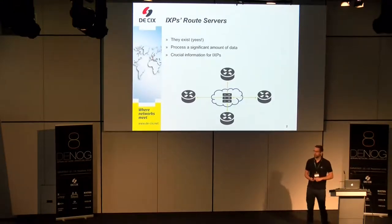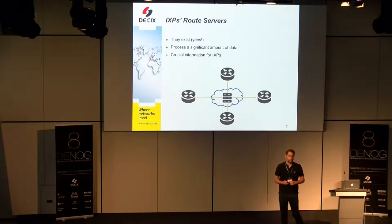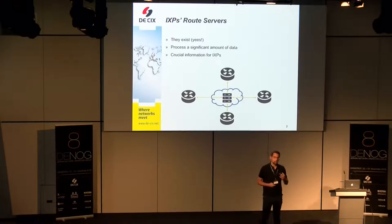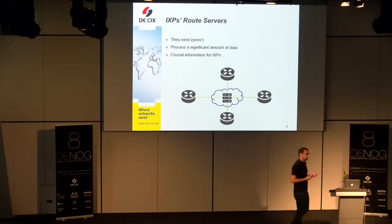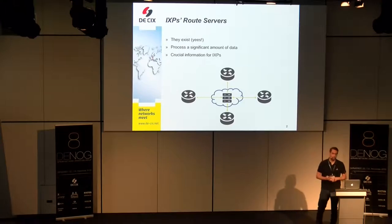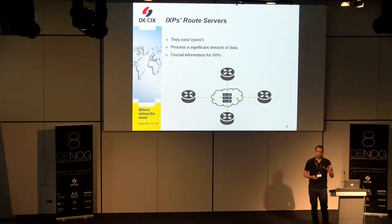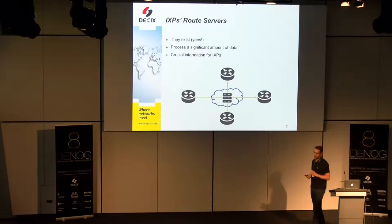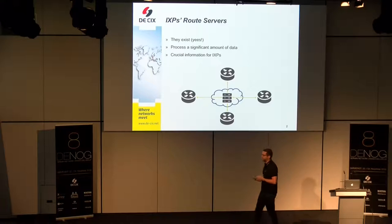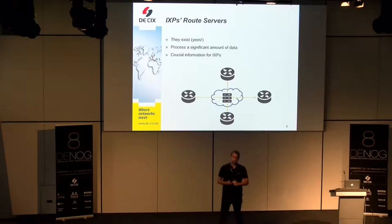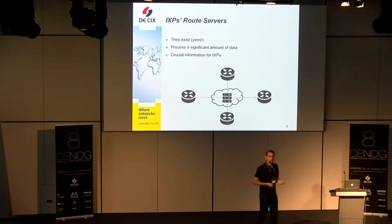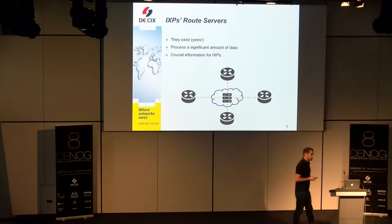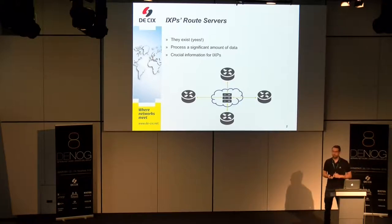Let's start off with the route server. Internet exchange points exist, they are a part of our ecosystem, and one important facility they have is the route server. Route servers have gained importance over the past decade and they process a significant amount of information for the IXP. The most peerings at DE-CIX, especially, are multilateral peerings which really rely on the route server, so there's a lot of BGP communication going on, and that information is very crucial for IXPs.